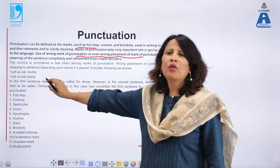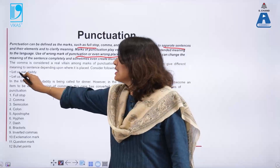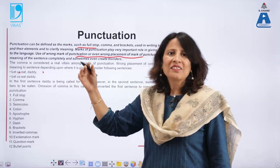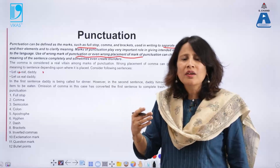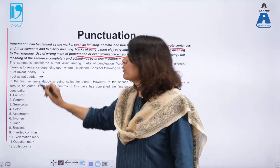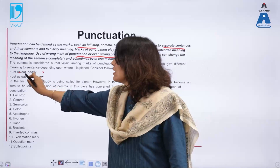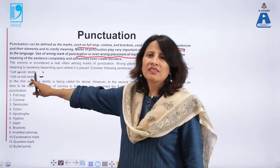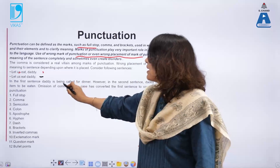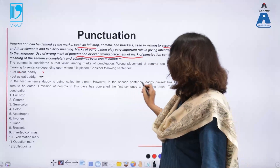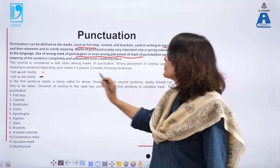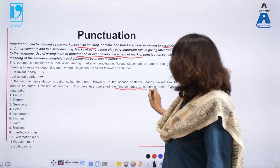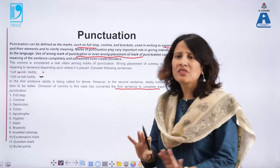Use of wrong punctuation or wrong placement of a mark can change or alter the meaning of a sentence entirely. For example, 'Let us eat, daddy' versus 'Let us eat daddy.' In the second sentence, it seems as if daddy is the one whom we are going to eat, while in the first, the emphasis is on eating and daddy is being called for dinner. So a comma changes the meaning entirely — omission of the comma converts the first sentence to something which does not make sense.